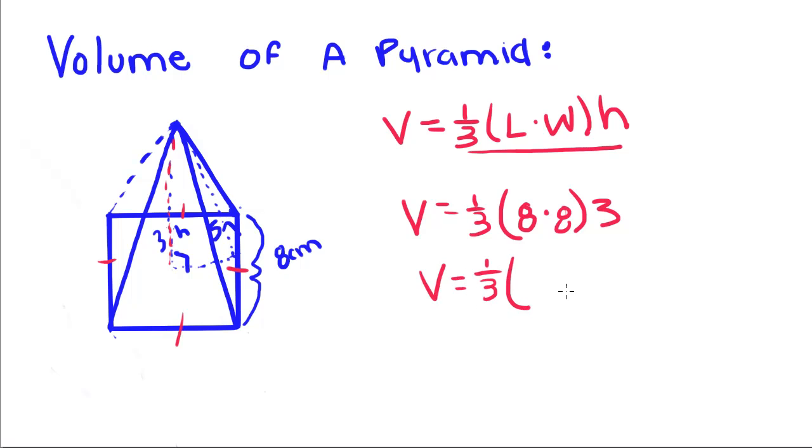V equals one-third, 8 times 8 is 64, times 3. Now we're going to multiply these all together. If you look, the 3 is going to cancel to the one-third, because when we multiply fractions, we multiply across. This 3 is like a 3 over 1, and if we multiply across, we'd get 3 over 3, which is just 1.